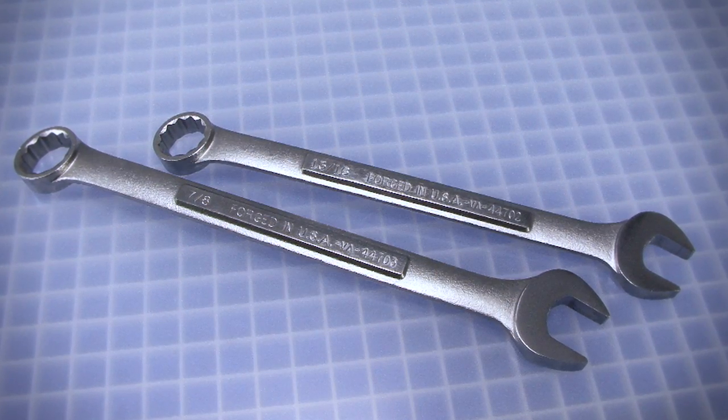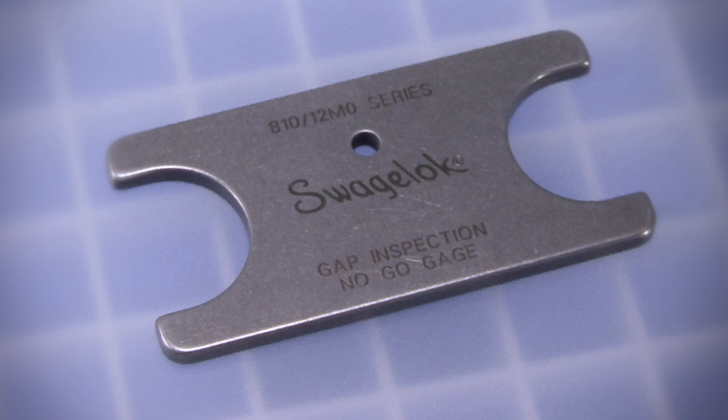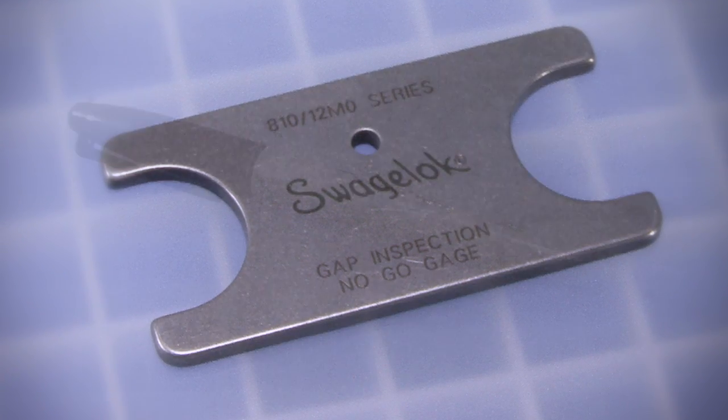Two open-ended wrenches or one open-end wrench and a vise. A Swagelok gap inspection gauge. A marker.